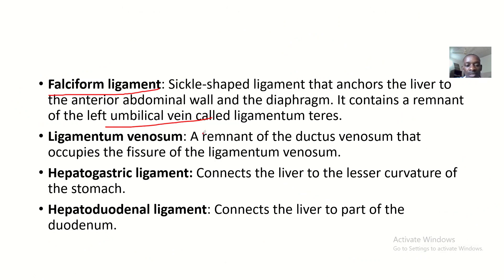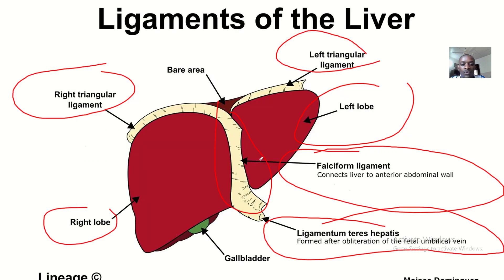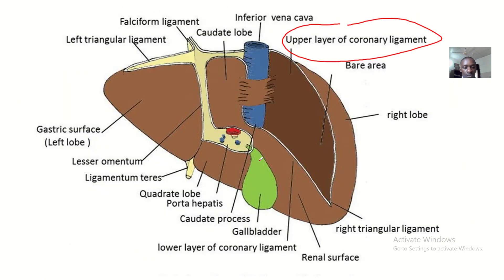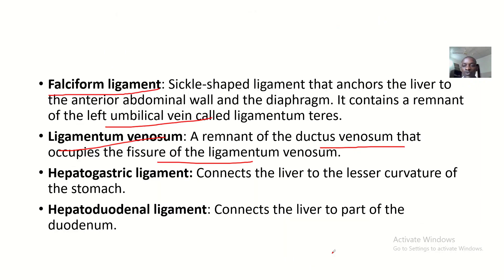Next is the ligamentum venosum, which is a remnant of the ductus venosus that occupies the fissure of the ligamentum venosum. It is not shown on our pictures, but if you have studied fetal circulation, you should know that the ductus venosus changes to become the ligamentum venosum after birth. When examining the liver, try to check where the ligamentum venosum is.